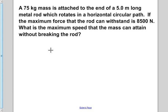A 75 kilogram mass is attached to the end of a 5 meter long metal rod which rotates in a horizontal circular path. If the maximum force that the rod can withstand is 8500 newtons, what is the maximum speed that the mass can attain without breaking the rod?